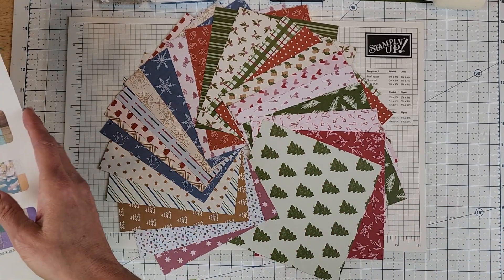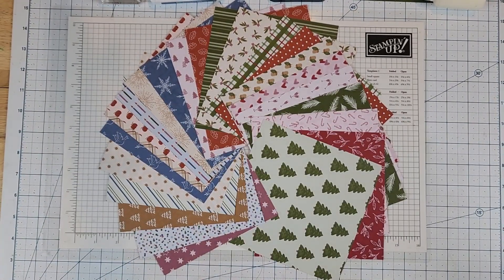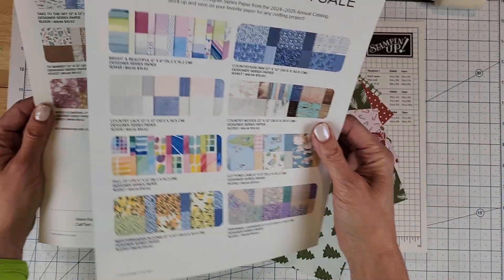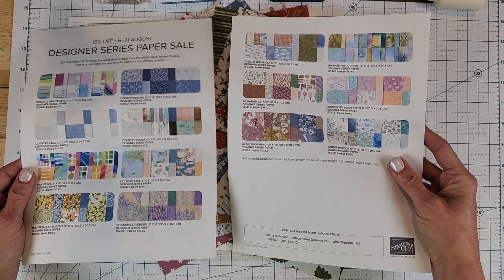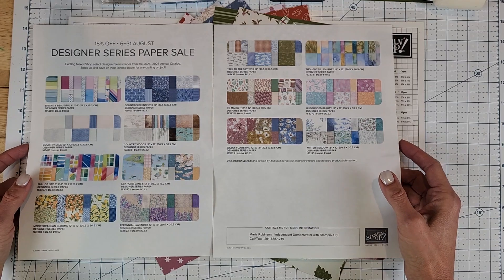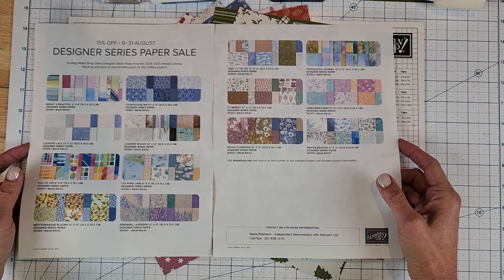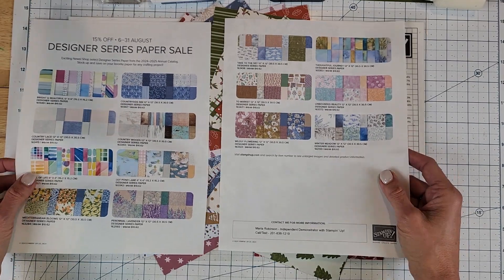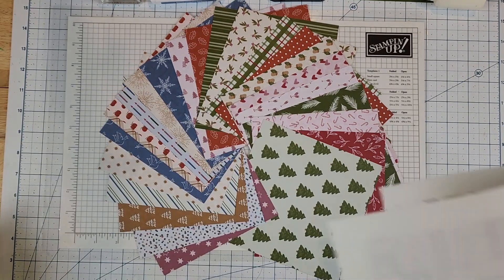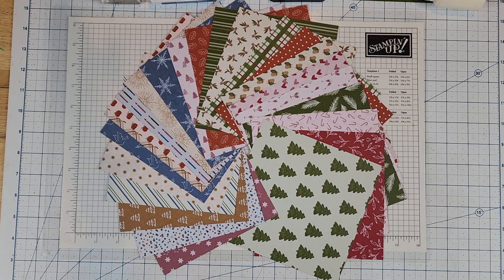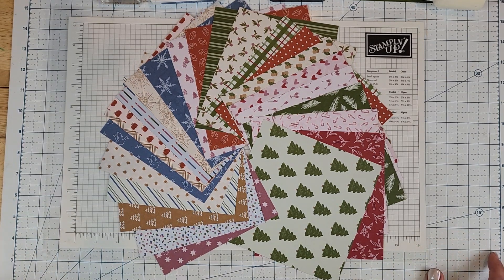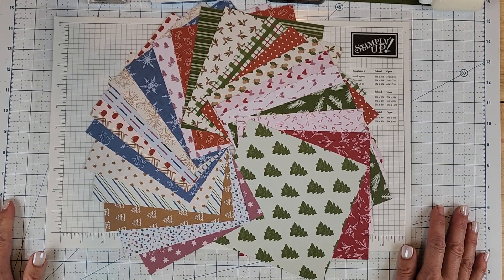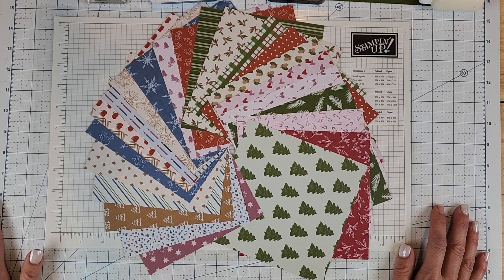One more thing. We have the Designer Series Paper Sale and that is going through the end of the month. There are 14 different Designer Series Papers on sale for 15% off, so it's a great deal and it's only in the annual catalog. It does not include the specialty papers or the online exclusives. And if you happen to be a demonstrator watching this, it also does not include the new pre-order items from the new mini catalog. Which brings me to my next point. If you are not working with a demonstrator and you don't have a catalog but you'd like to receive one, you can request it in the description below the video.